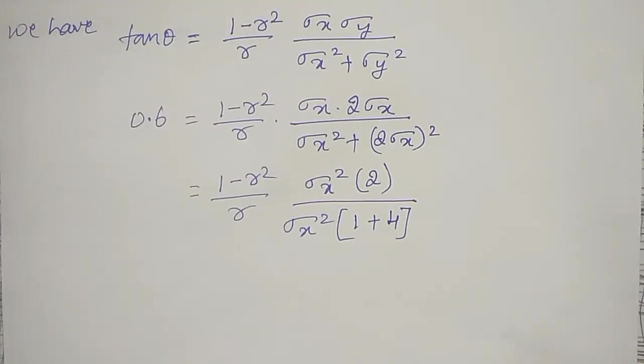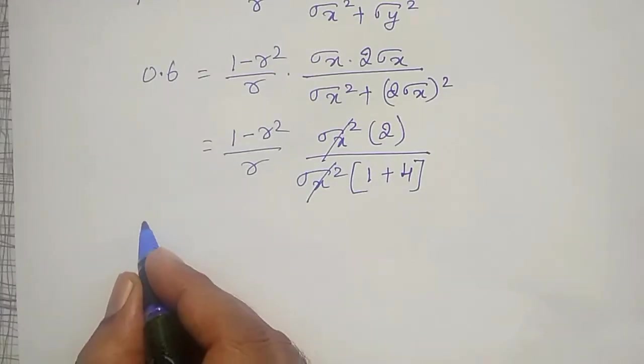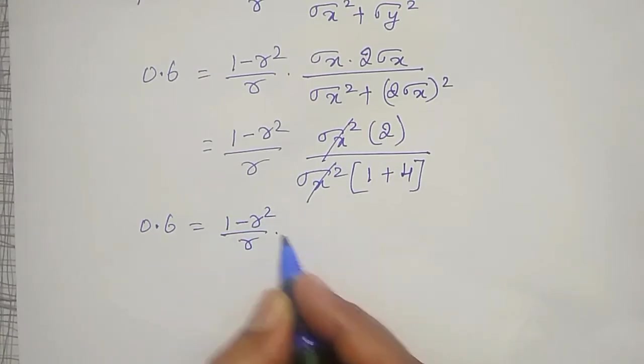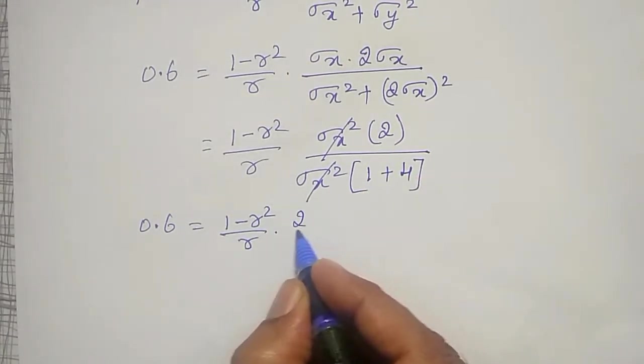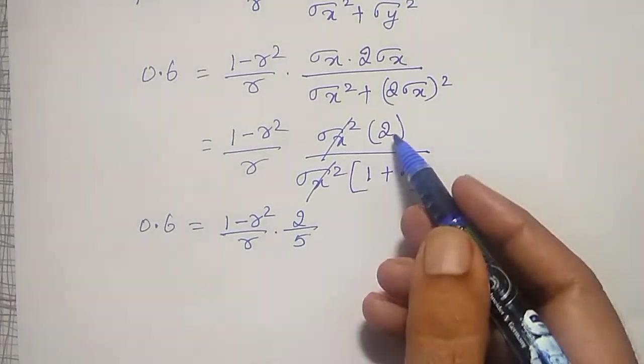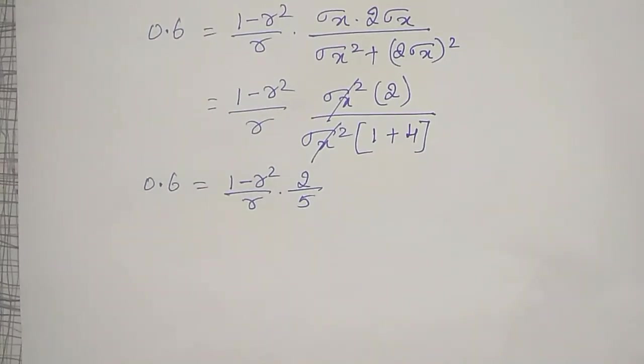Sigma x square cancels. Therefore, 0.6 is equal to (1 minus r square) divided by r, times 2 divided by 5. This is nothing more than a quadratic equation. This quadratic equation I have to solve now.